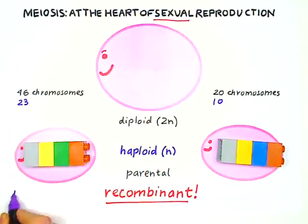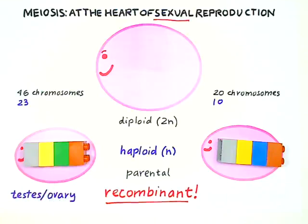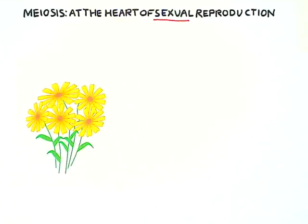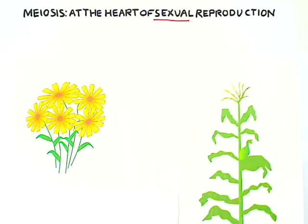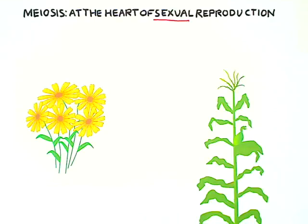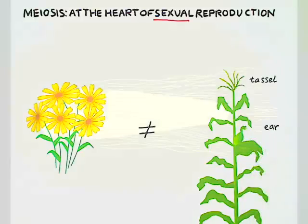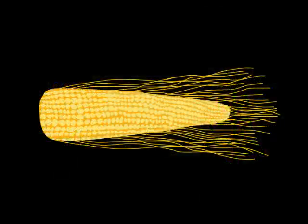Reproductive cells are, of course, produced in sexual organs — ovaries and testes in humans, and carpels and stamens in flowering plants. In most flowering plants, sexual organs reside together in one single flower, but not so in corn. The sexes are separated. Male flowers form the tassel at the tip of the plant, and they will shed pollen, which contains haploid sperm cells. Female flowers will form ears on the lower section of the plant. Each silk on an ear can receive one pollen grain, which will send its sperm cells to the unfertilized egg, which is also haploid.